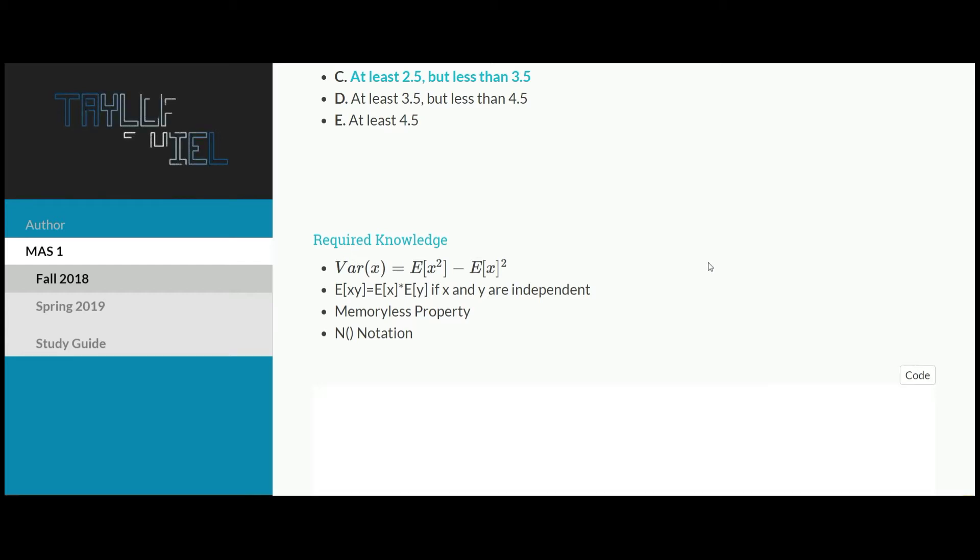The third bullet point is the memoryless property, specifically with respect to the Poisson process for this problem. All this is getting at is what happens for the first unit of time has no impact on the second unit of time. We're going to be looking at car crashes, so I don't care how many car crashes occurred yesterday, that's not going to influence how many car crashes happened today.